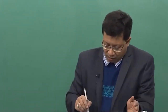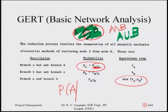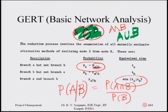The conditional probability concept means P(A given B has already occurred) equals P_A intersection B divided by P_B — that is, provided B has occurred, what is the probability that A would also occur. You can extend this to probability of A given B and C have occurred, and proceed to whatever level you want. This means the number of branches, edges, and nodes would be much larger in the GERT process.